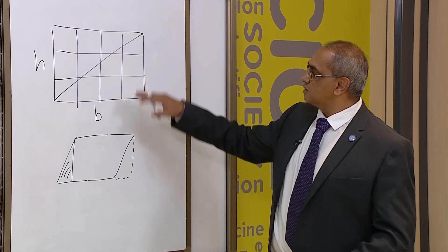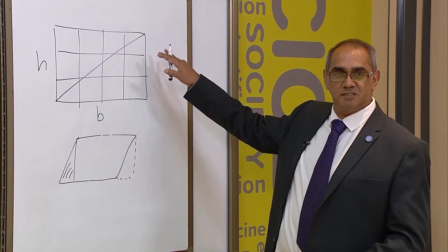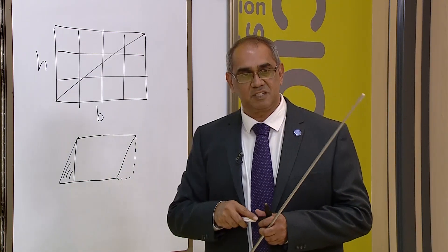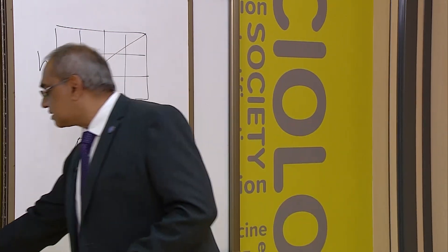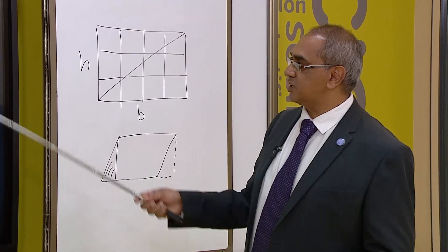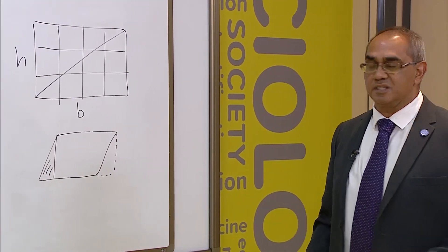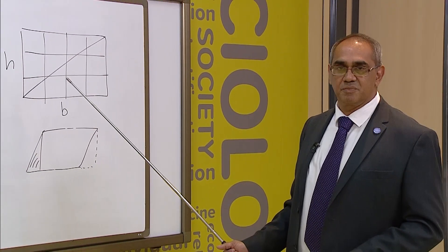So if I want half of it, which happens to be a triangle, I get the area for the triangle. Simple as that. That is the area for a triangle. So when you see half base times height, this is where we are getting it from.